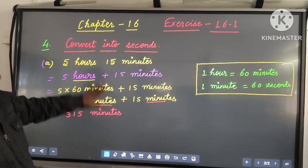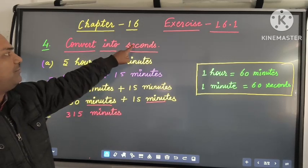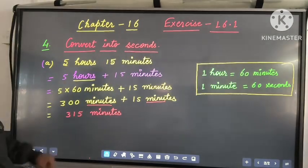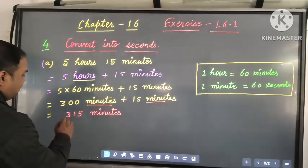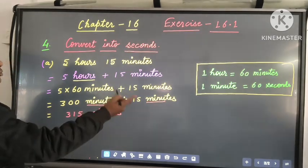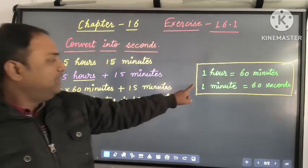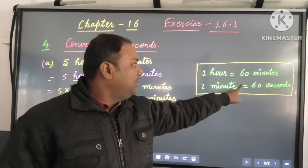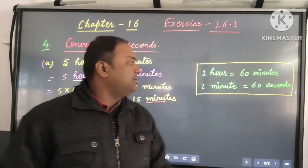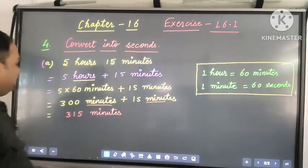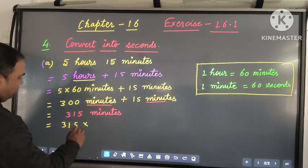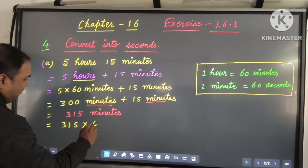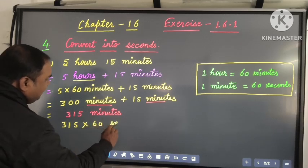Now we have 315 minutes, but the question asks us to convert into seconds. So we have to convert 315 minutes into seconds. Since 1 minute is equal to 60 seconds, we will write down 315 multiplied by 60 seconds.